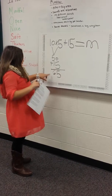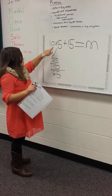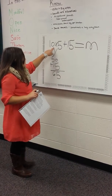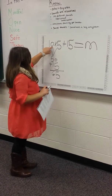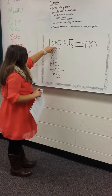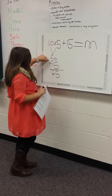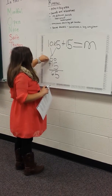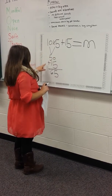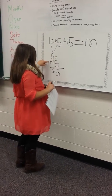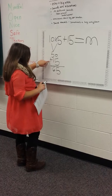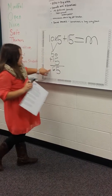That's my answer. 10 times 5 equals 50. 10 times 5 plus 15 equals 65.